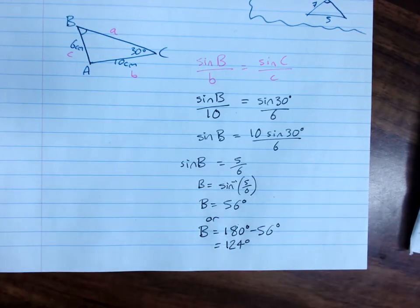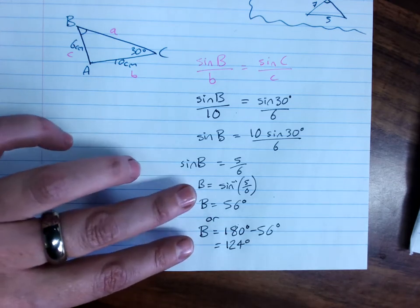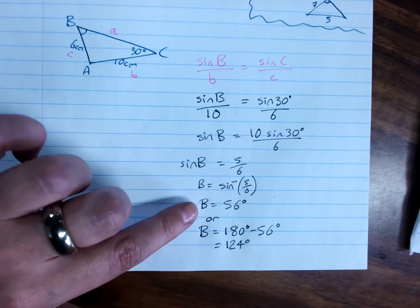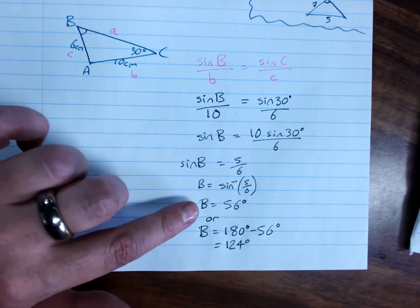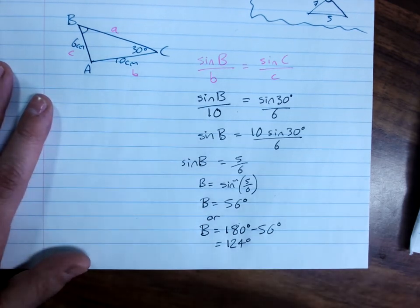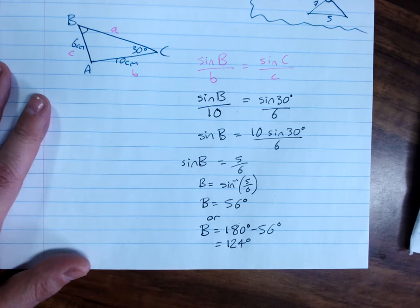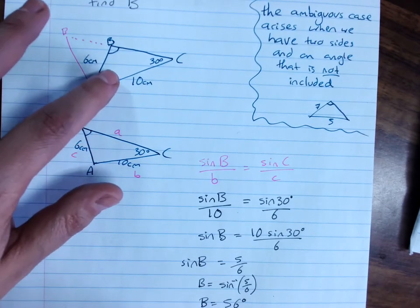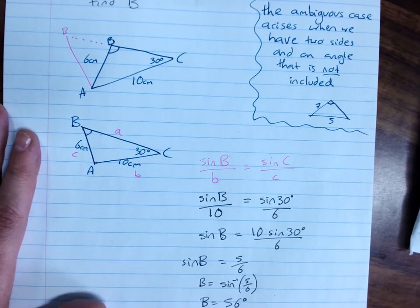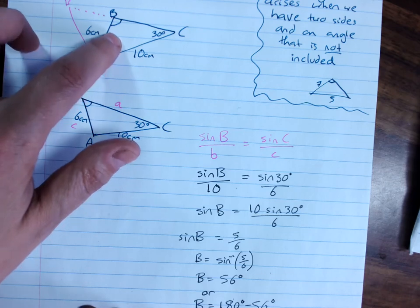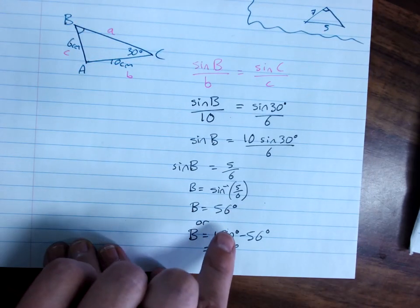So that is the ambiguous case, because there's two possible values of the angle that work for this value of sine of the angle. Without any other guidance as to what to do, I must offer both solutions. If you have guidance as to whether this is acute or obtuse, you can get away with just producing the correct answer. If you discover that it's obtuse, you'll have to find the acute angle and then get its supplement anyway.